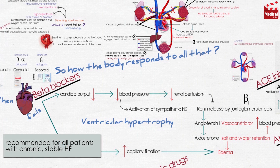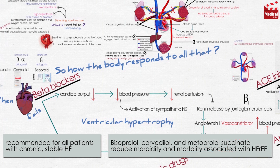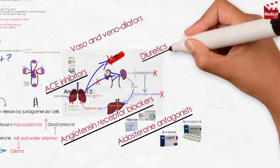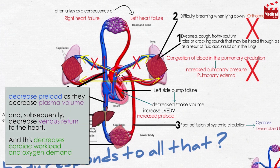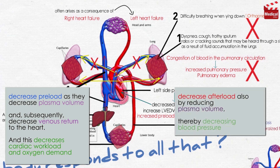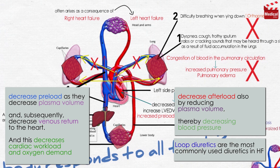Beta blockade is recommended for all patients with chronic stable heart failure. Bisoprolol, carvedilol, and metoprolol succinate reduce morbidity and mortality associated with heart failure with reduced ejection fraction. Diuretics relieve pulmonary congestion and peripheral edema, and are useful in reducing symptoms of volume overload including orthopnea and paroxysmal nocturnal dyspnea. Diuretics decrease preload as they decrease plasma volume and subsequently decrease venous return to the heart, decreasing cardiac workload and oxygen demand.